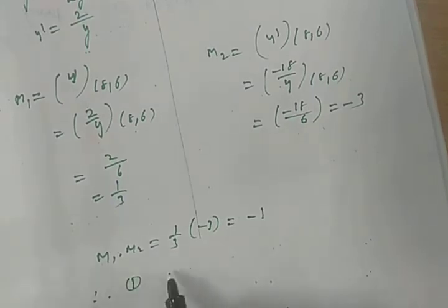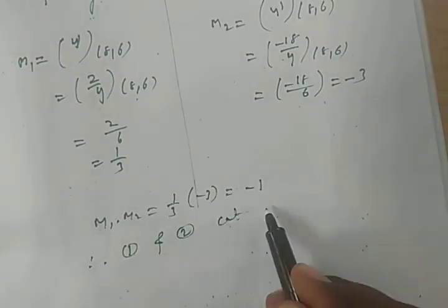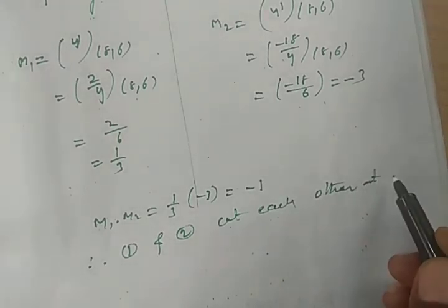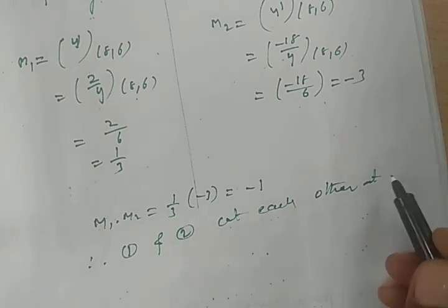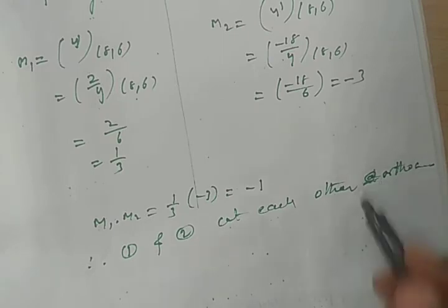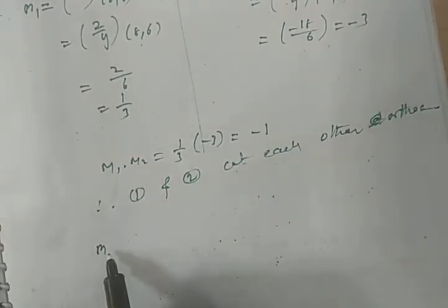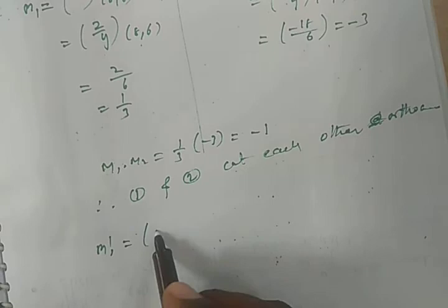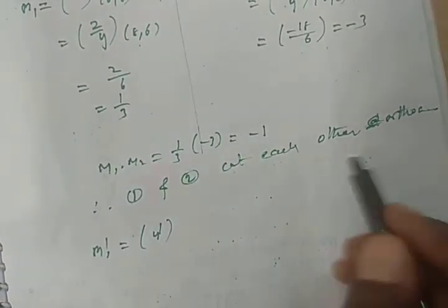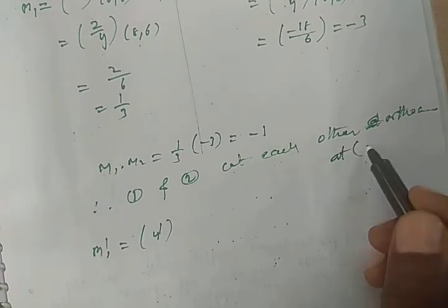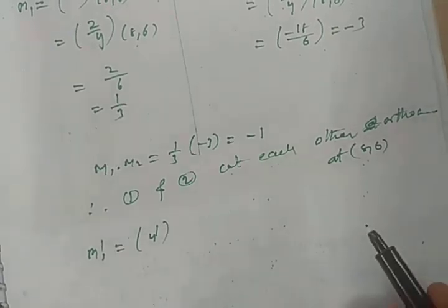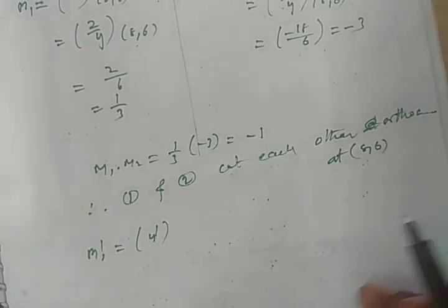Therefore, equations 1 and 2 cut each other orthogonally at point (8, 6). Next, let us find the slopes at point (8, −6) to show orthogonality there as well.